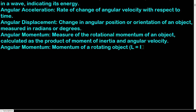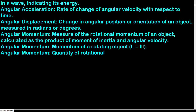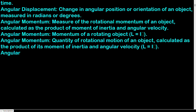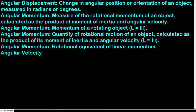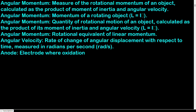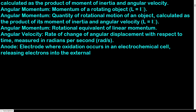Angular momentum: measure of the rotational momentum of an object, calculated as the product of moment of inertia and angular velocity; L equals Iω — the rotational equivalent of linear momentum. Angular velocity: rate of change of angular displacement with respect to time, measured in radians per second. Anode: electrode where oxidation occurs in an electrochemical cell, releasing electrons into the external circuit.